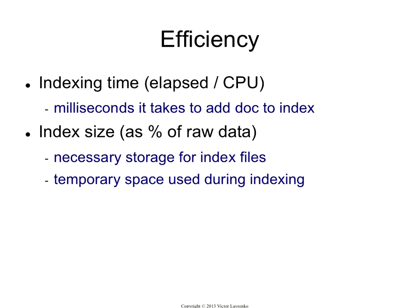Another variable you measure for efficiency is index size. If your raw data takes 100 gigs and you're building an index, how much space is that index going to take? It is a big issue for Google, and it's a much bigger issue if you're building a desktop search system, because the user doesn't expect you to take up a lot of space for the index. So the size of the index as a proportion of the raw data is a big constraint. That's why you use things like compression to make the indices take a bit less space on disk.